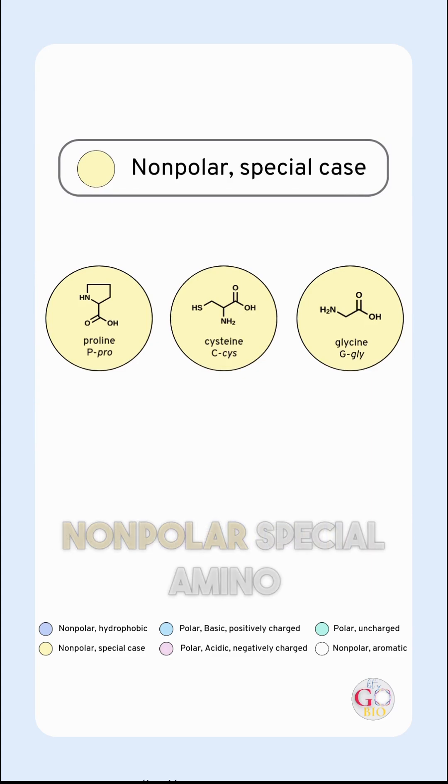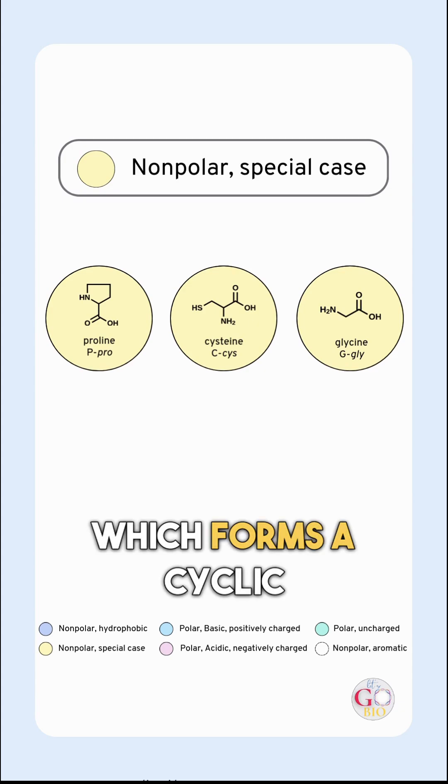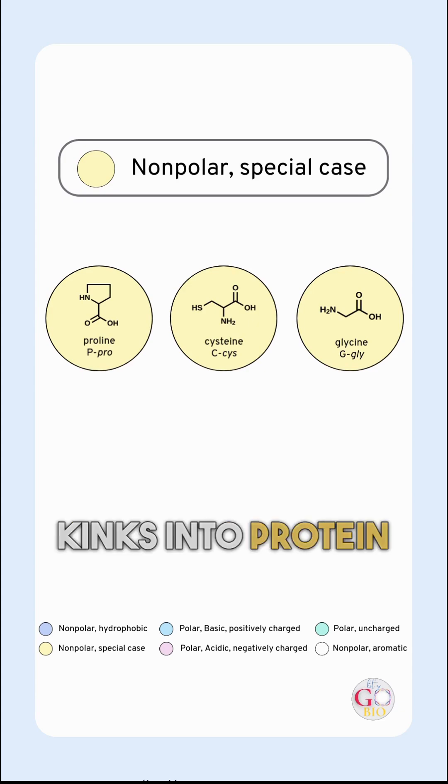Nonpolar special amino acids are shown in yellow and have their own special properties. They are proline, which forms a cyclic structure or introduces kinks into protein structures.